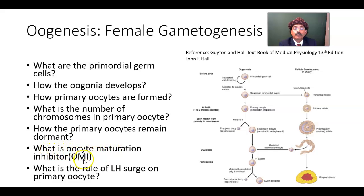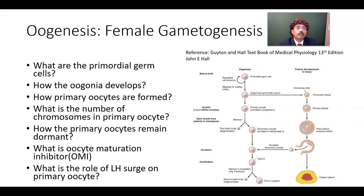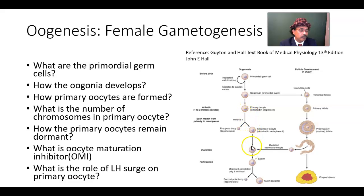What is the oocyte maturation inhibitor? We have follicular cells around the oogonium. Initially they are flattened, then they become cuboidal, eventually even columnar. There will be cavity formation, and we call it the mature follicle around the developing ovum. These follicular cells have the capacity to produce oocyte maturation inhibitor, so not necessarily all oogonia will progress through these stages.